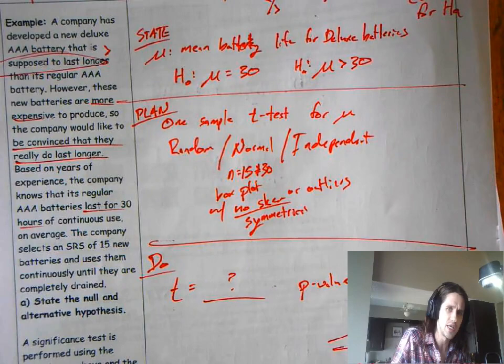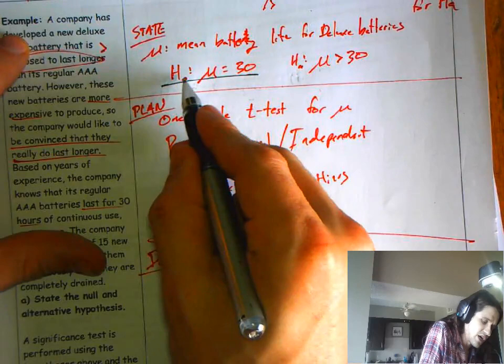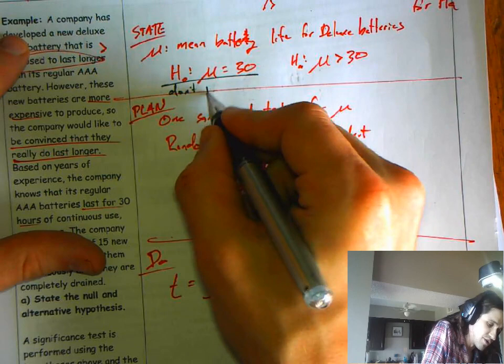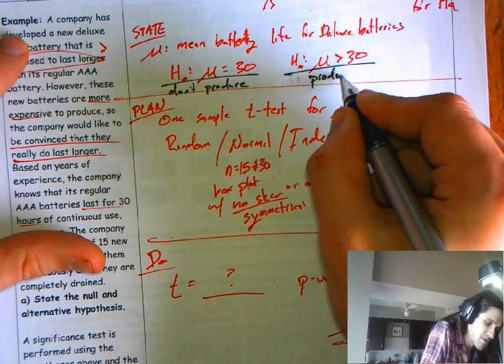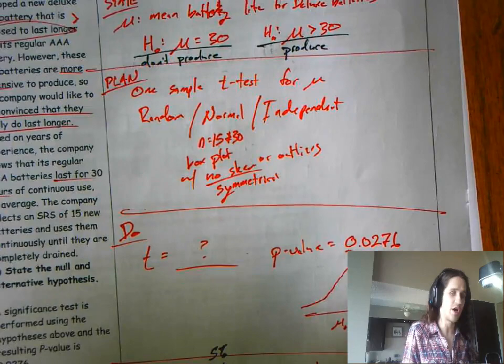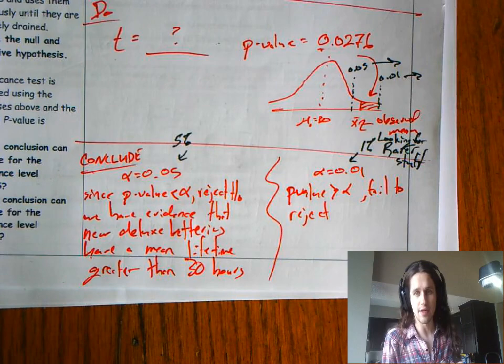If we set alpha to be smaller, we're looking for rarer stuff. We're looking for things that would happen less often. We're looking for stronger evidence in order to be able to reject the null hypothesis. And let's go back to the beginning here, and let's ask ourselves, what does concluding one or the other have to do? The consequence of this, if we don't reject, we don't make the batteries.